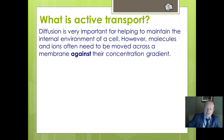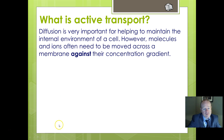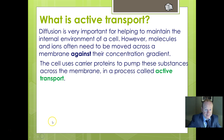In active transport, we think about movement of molecules against their concentration gradient. In other words, we're trying to make something more concentrated inside a cell, for example, and there are a number of examples we'll be looking at where this is important.